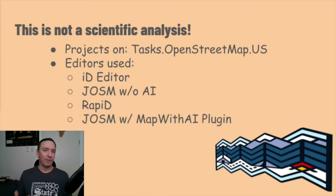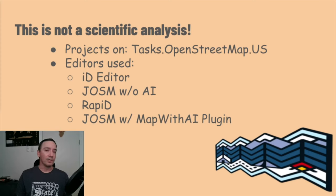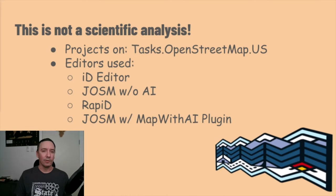Before I dive in, a bit of a disclaimer: this talk should not be taken as a scientific analysis, only my attempt to spark the conversation and provide my findings. As a mapper, I explored four different methods to map buildings: the standard iD editor, the JOSM editor using the Buildings and Extrude tools, the Rapid editor utilizing Microsoft Buildings footprints generated with AI, and JOSM with the Map with AI plugin and the Microsoft Buildings. All of those launched from a project I created for Chafee County, Colorado on the OpenStreetMap US Tasking Manager.